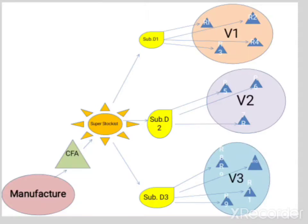To an extent, the problem of transportation and other costs of distribution can be minimized by this hub and spoke method of distribution. Starting from the manufacturer, the produce is transported to the carrying and forward agents, then to super stockists. The super stockists exist at the district level, and there will be a single super stockist per district.